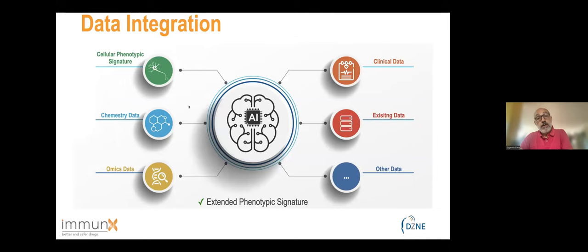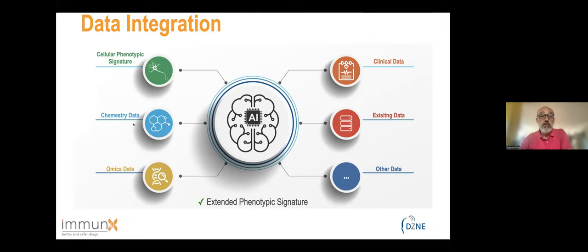We try to integrate all our data — this is also very important. If you want to develop new methods using AI approaches like machine learning or deep learning, it is important that your algorithm can feed on different data types, and not all data are compatible with each other. In addition to our cellular phenotypic signature, we add chemistry data, omics data, clinical data, and other existing data from other laboratories, or any other data that comes up in the future.